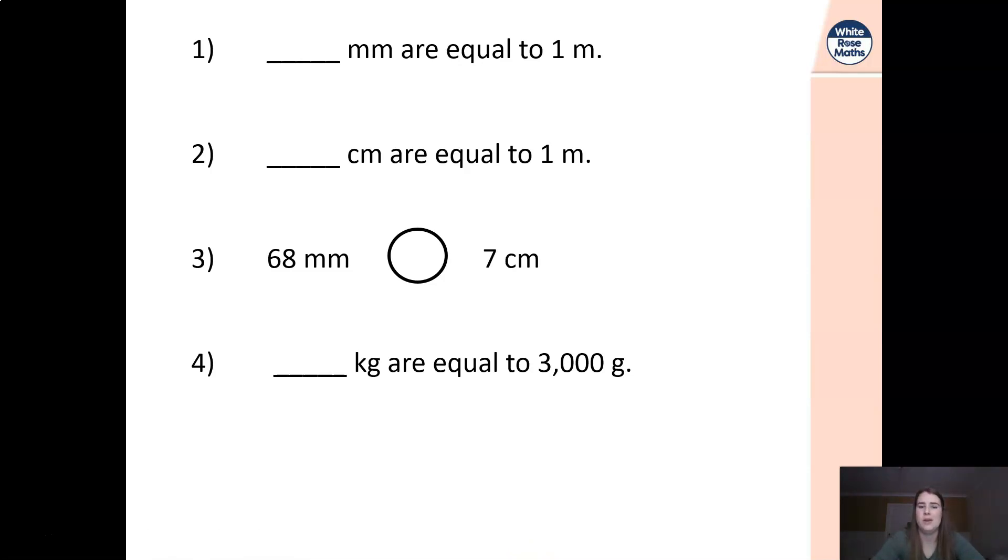Okay we know that there are a hundred centimeters in a meter so there must be a thousand millimeters in one meter and a hundred centimeters in one meter. We know that 68 millimeters, we've then got to divide that by ten. That's going to give us 6.8 and seven or 70 millimeters and 68. So we know that 70 is going to be bigger.